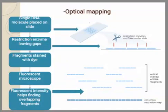Optical mapping also uses restriction enzymes but only on a single molecule of DNA, which is stretched and held in place on a slide. The restriction enzyme cuts the DNA at a specific point, producing gaps. The fragments are then dyed so that the gaps can be visualized under a fluorescence microscope. Similar gaps increase the fluorescence intensity, and these similar intensities are overlapped with each other. When we combine the results of all overlapping fragments, we get the physical map of the chromosome or genetic region.